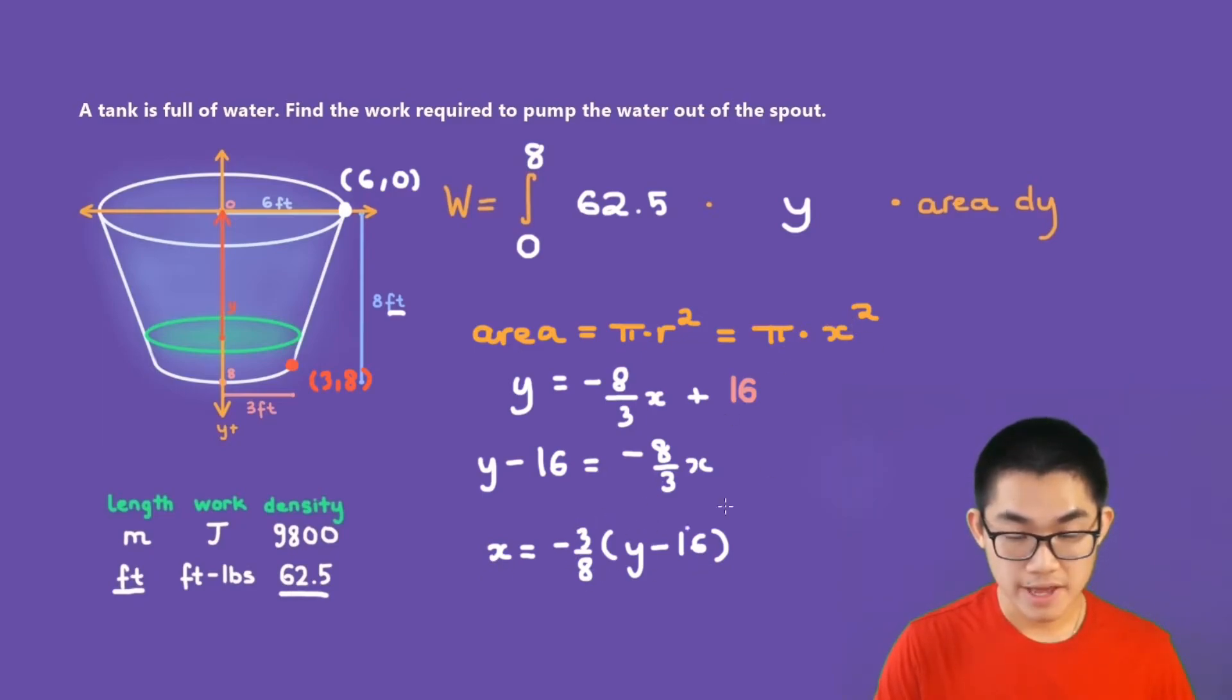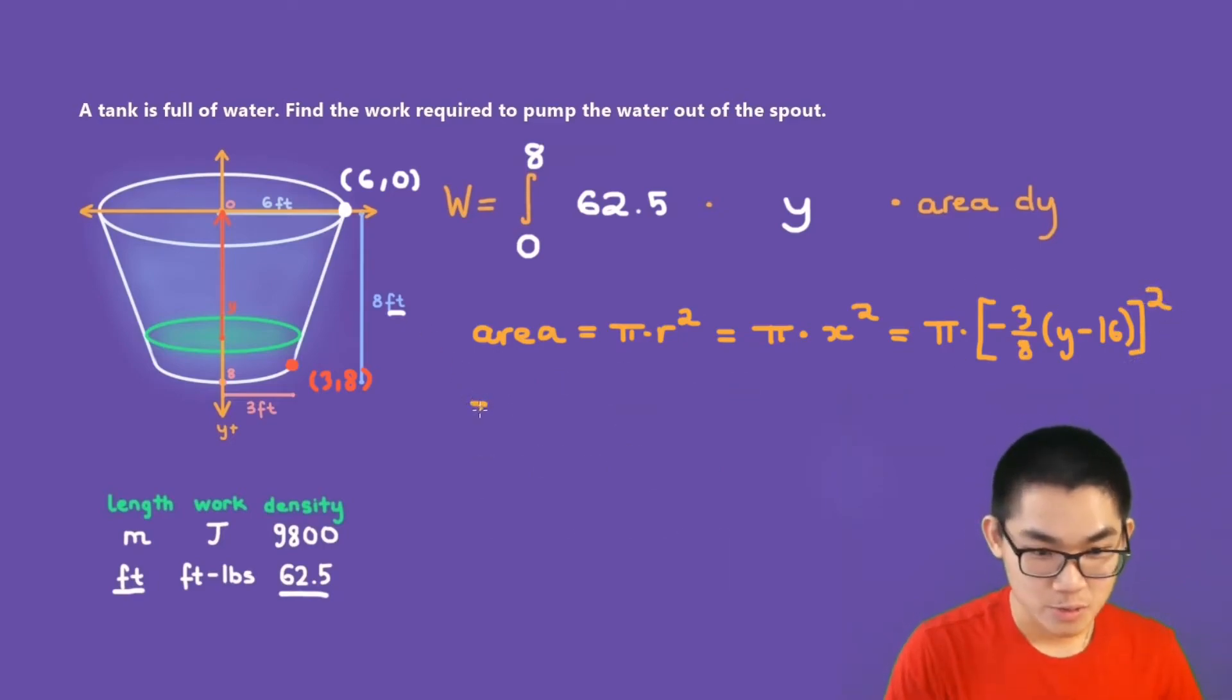And we can substitute this right here into our x squared in order to find the area. So the area is equal to pi times x to the power of 2. And we know that x is equal to this expression right here, which is negative 3 over 8 times y minus 16, close the bracket and to the power of 2. This is equal to pi times 9 over 64. So 9 over 64 times y minus 16 to the power of 2. And this is the same as 9 over 64 times pi times y minus 16 to the power of 2.